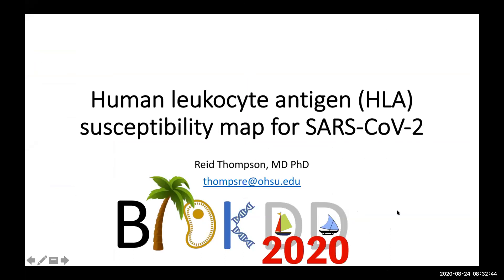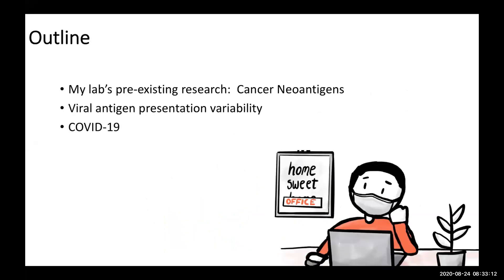The title of my talk is 'Human Leukocyte Antigen or HLA Susceptibility Map for SARS-CoV-2.' My lab's preexisting research is in cancer neoantigens. I'll give a short background and then dive into the main hypothesis: viral antigen presentation variability as a function of HLA type, focusing specifically on our findings in COVID. This is an overall schematic of tumor neoantigen presentation via the endogenous MHC class I antigen presentation pathway. Proteins get broken down through the proteasome, processed through transporters, and shuttled to the cell surface for immune surveillance.